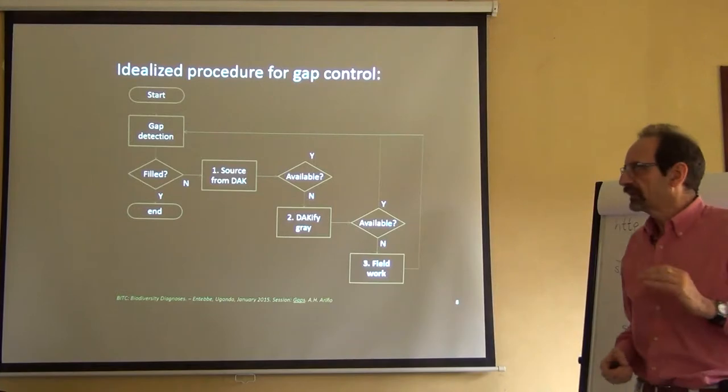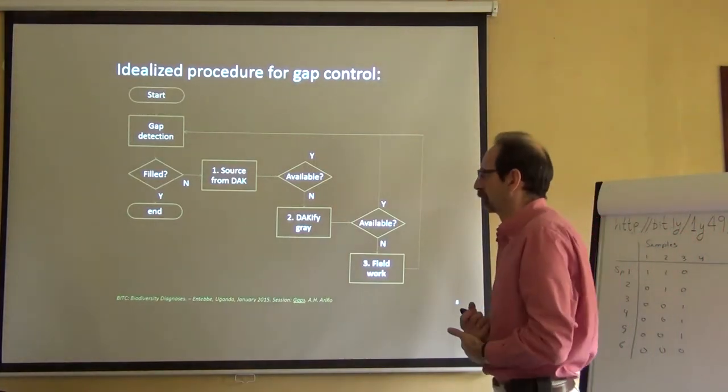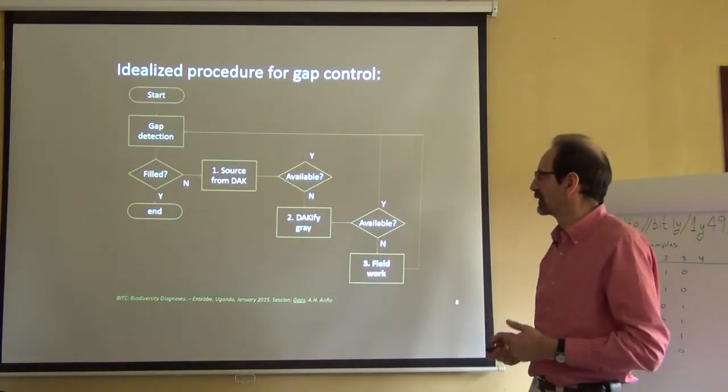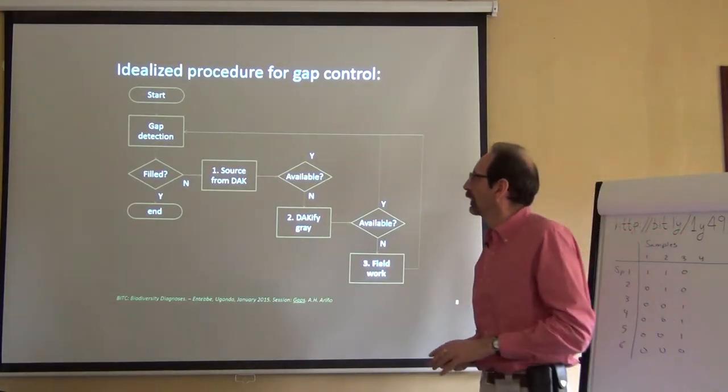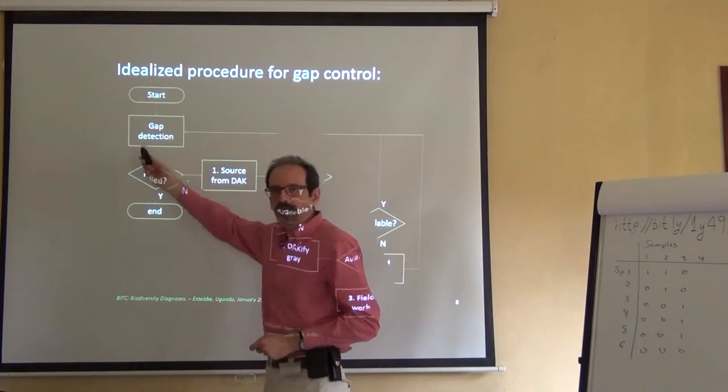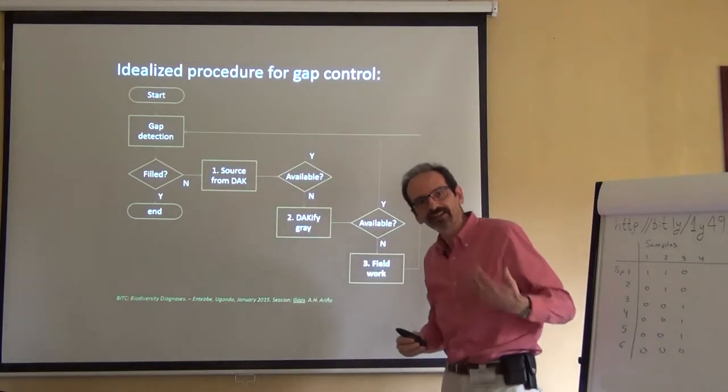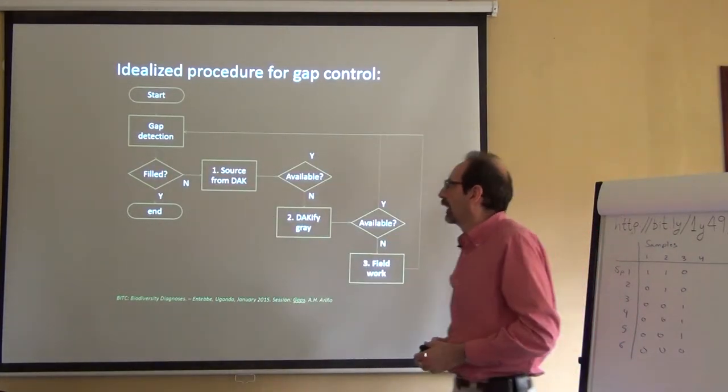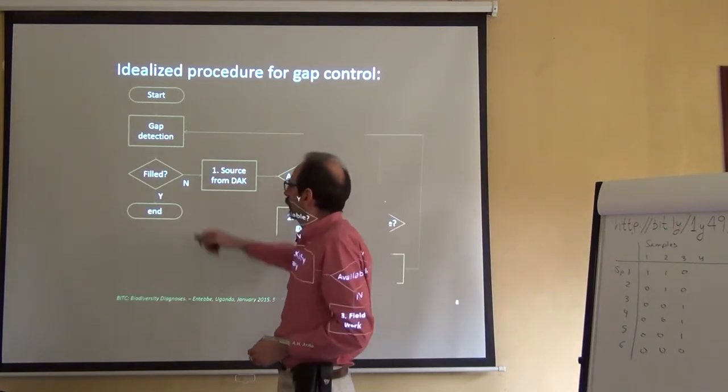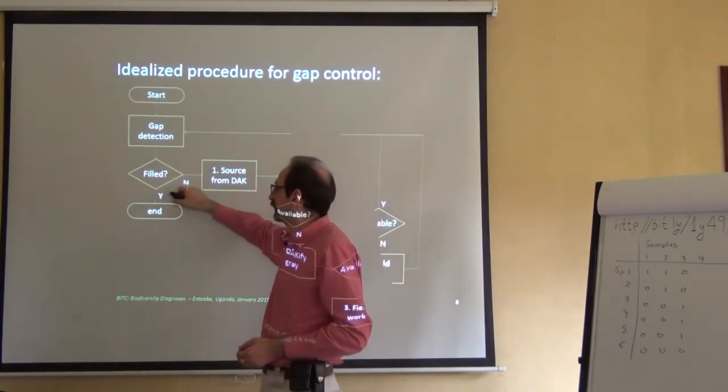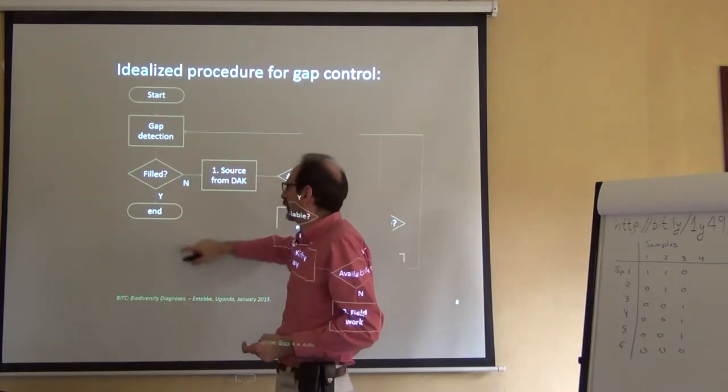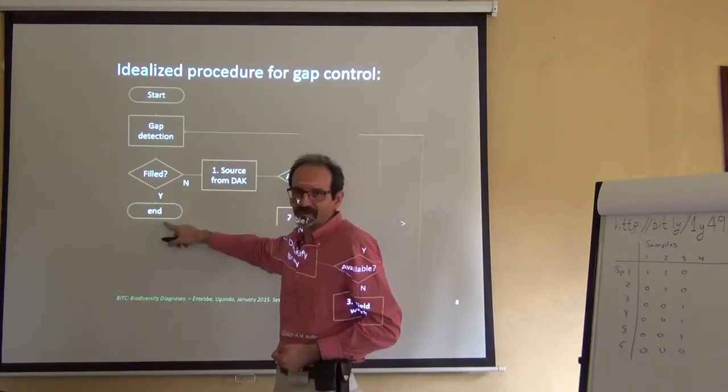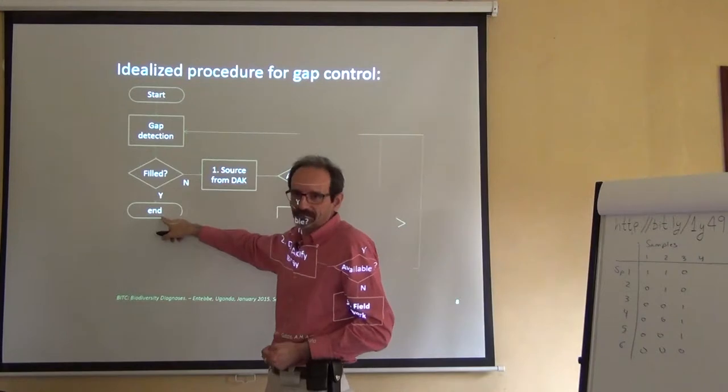So there are still places where we haven't yet been. Now, this is an ideal procedure for gap control, which means how should we deal with the gaps. We should start here and then do some kind of gap detection. We should try to find a gap. And normally the first time, we'll see that if there is a gap, this gap is not filled. If it's filled, it's because there is not a gap, so we can end right there.